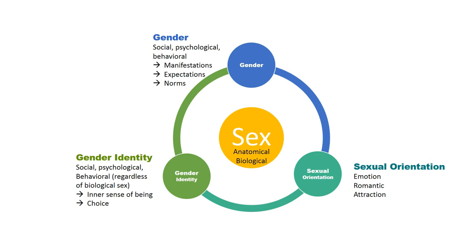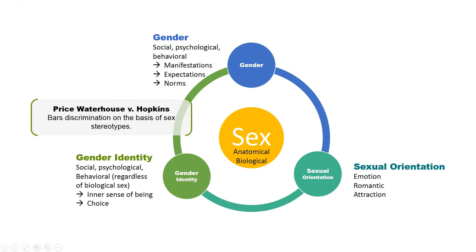To understand the complexity of this, let's discuss the Price Waterhouse v. Hopkins case. It illustrates how the terms sex and gender have a lot of interplay and overlap and are largely synonymous. In this case, Hopkins was up for partnership at Price Waterhouse, an accounting firm, but was neither offered nor denied partnership. Her candidacy rolled over to the next year, and when she was denied her partnership, she sued under Title VII based on sex discrimination. Her argument was that she was denied partnership because she didn't fit the company's idea of what a female employee should look and act like — arguing that this gender stereotyping is sex-based discrimination. The case went through the district court, the appeals court, and finally to the Supreme Court, which established that gender stereotyping is sex-based discrimination and would be actionable under Title VII.